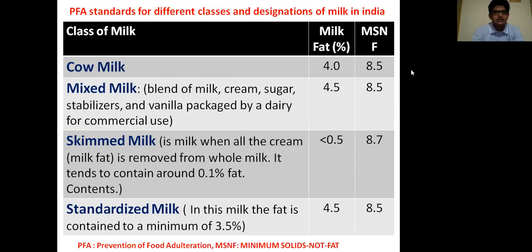The second class is mixed milk. Mixed milk is a blend of milk, cream, sugar, stabilizer, and vanilla packaged by a dairy for commercial use. Mixed milk contains 4.5% milk fat and 8.5% MSNF.